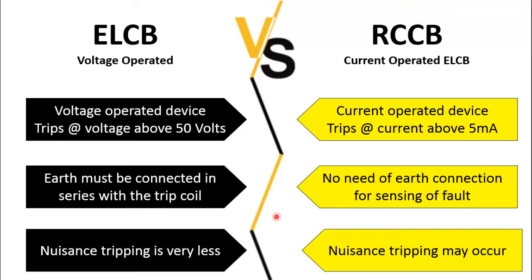These are the main differences between the two circuit breakers, but nowadays RCCB is used because it is more sensitive and reliable, and no special earth connection is required for it to operate. I hope you clearly understand the working principle and differences of these two circuit breakers. For more interesting videos stay tuned and don't forget to subscribe to our channel. Thank you for watching.